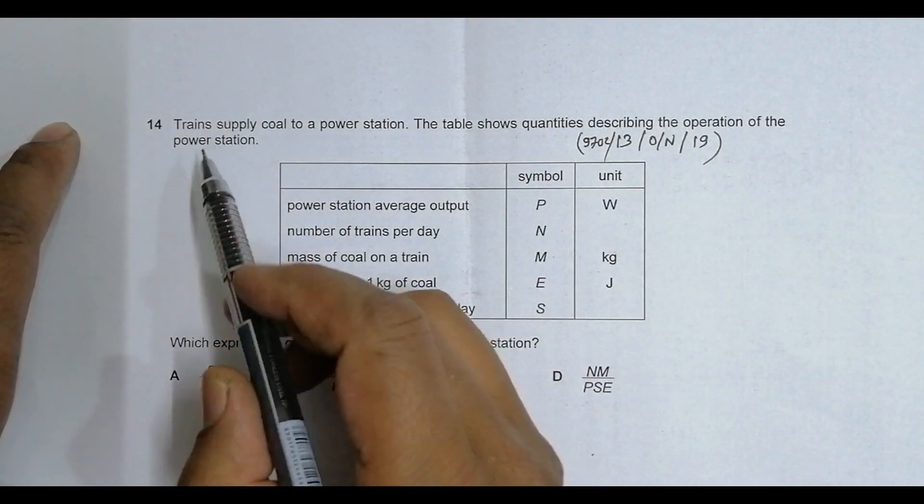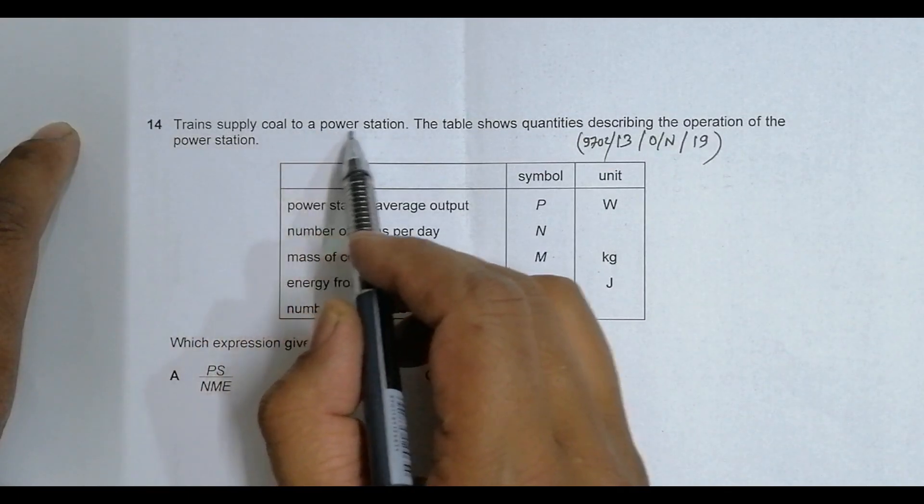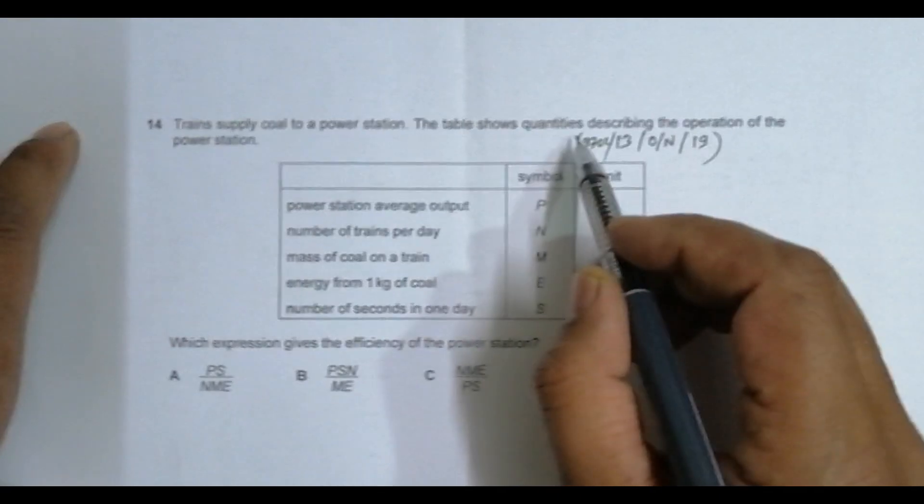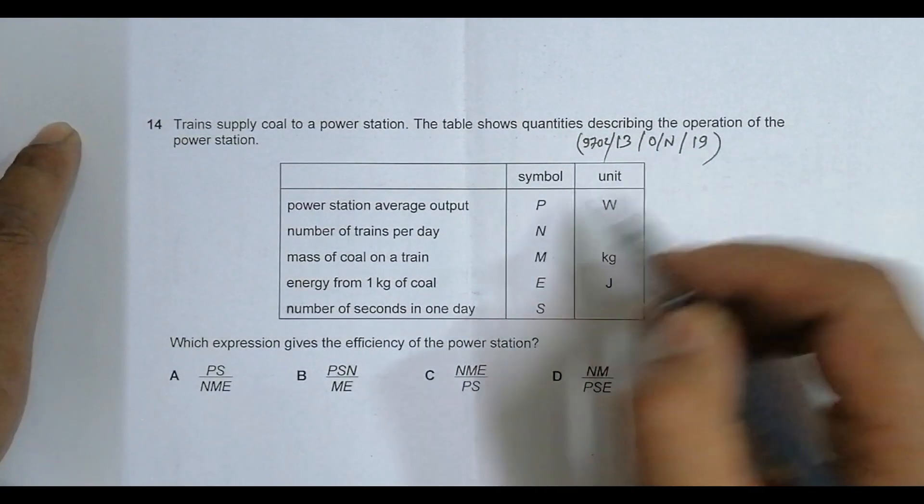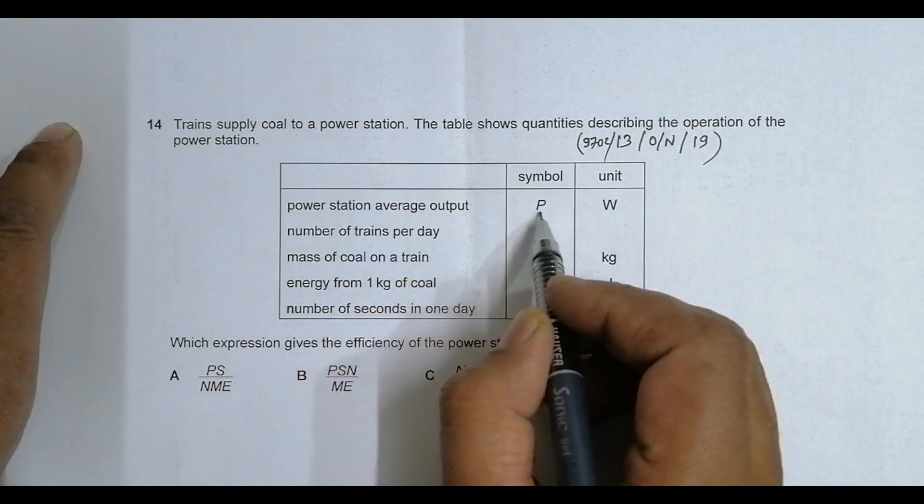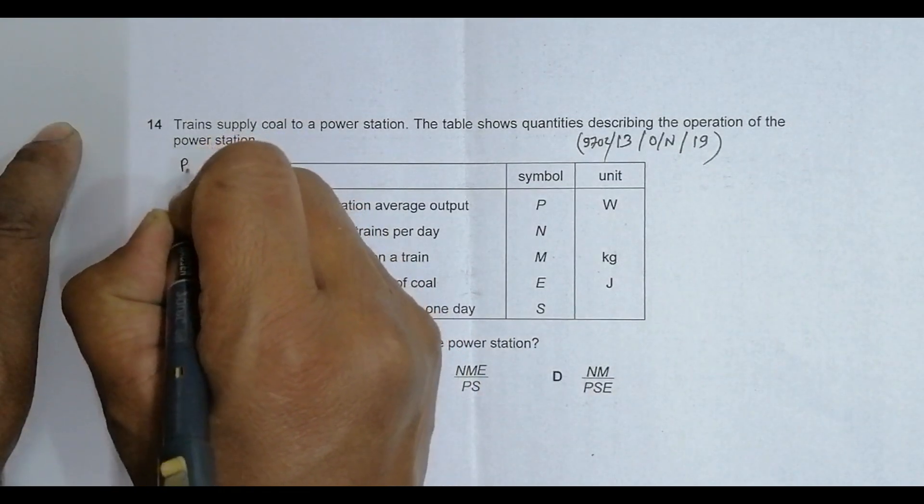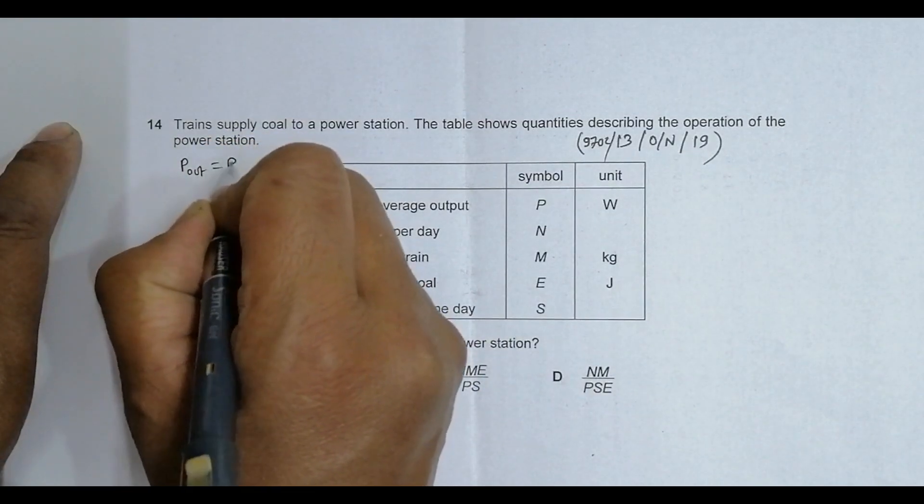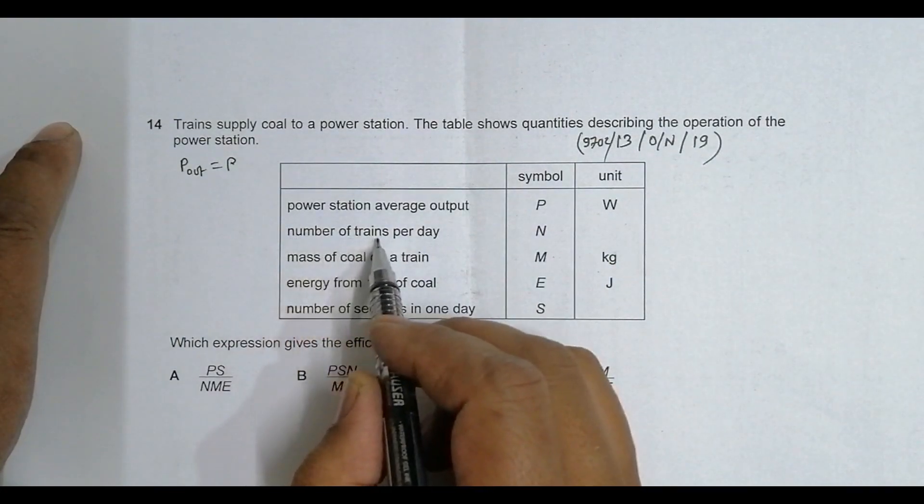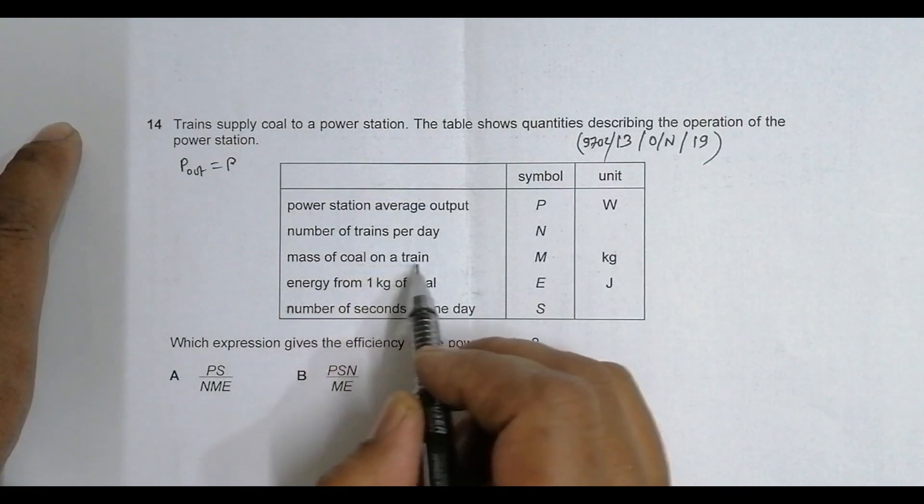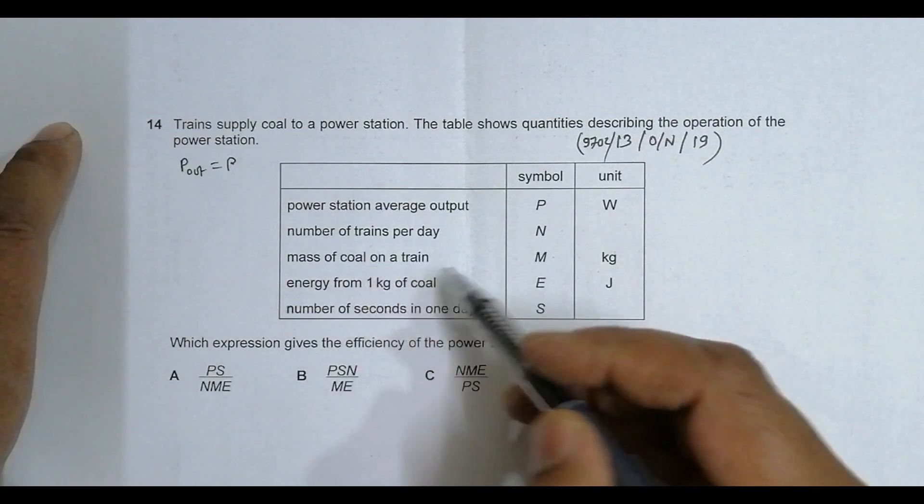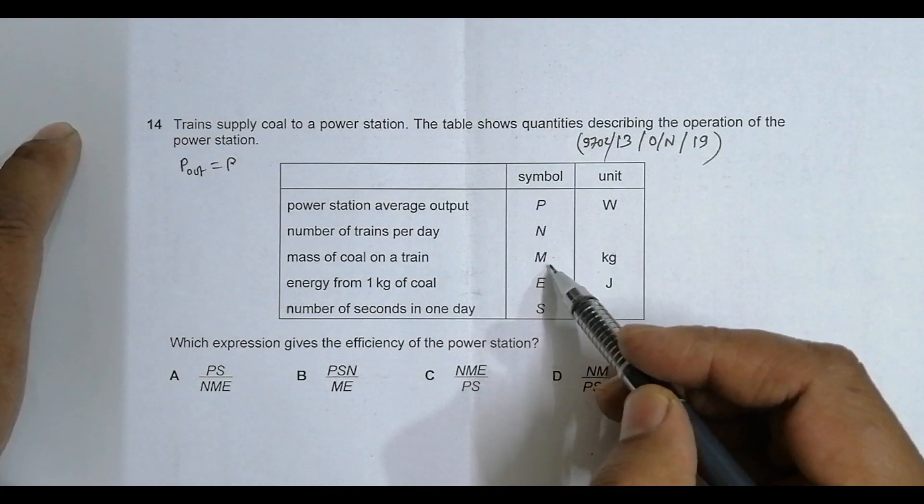It's concerned with the chapter work, power, and energy. The problem states that trains supply coal to a power station. The table shows quantities describing the operation: power station average output P in watts, number of trains per day N, mass of coal on a train M in kg, energy from 1 kg of coal E in joules, and number of seconds in one day S.